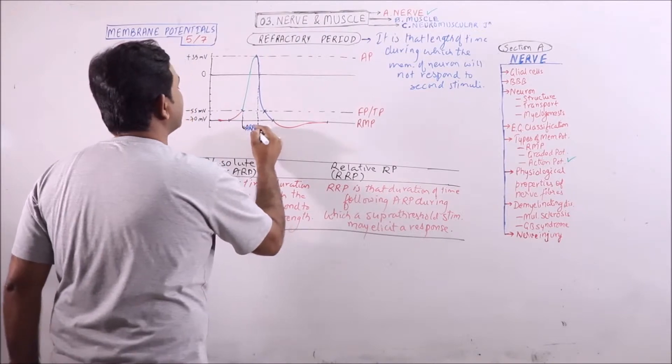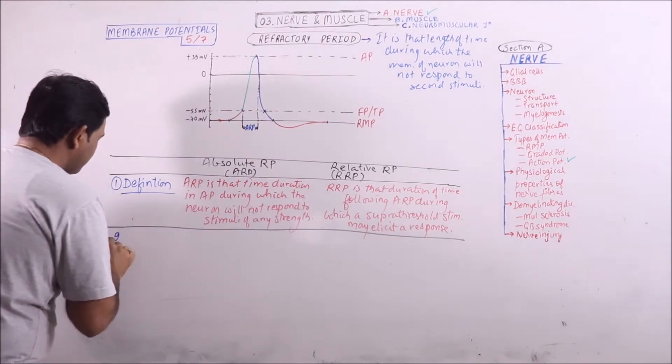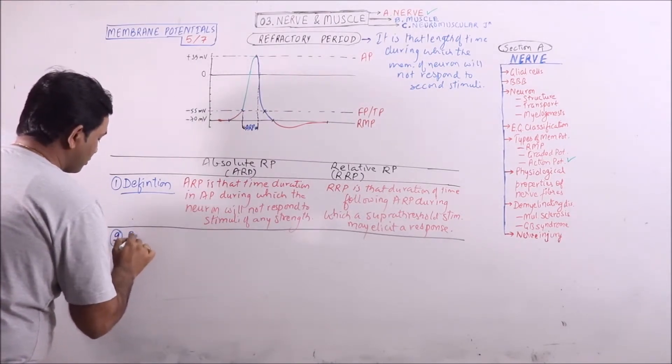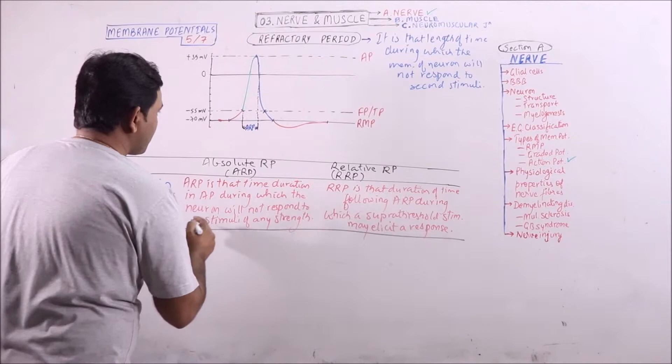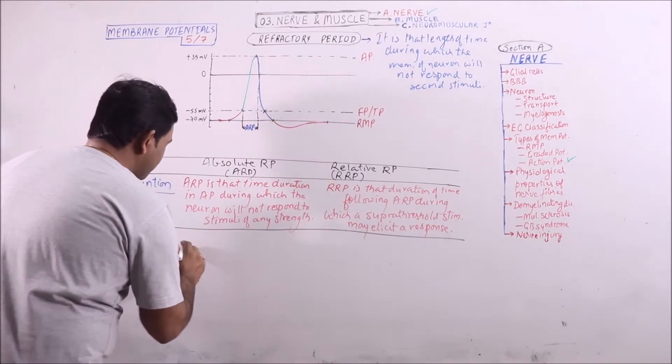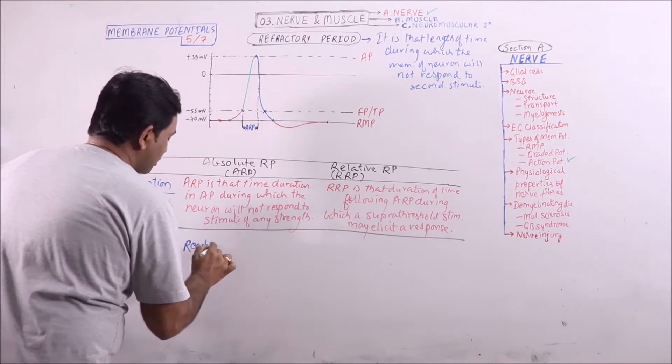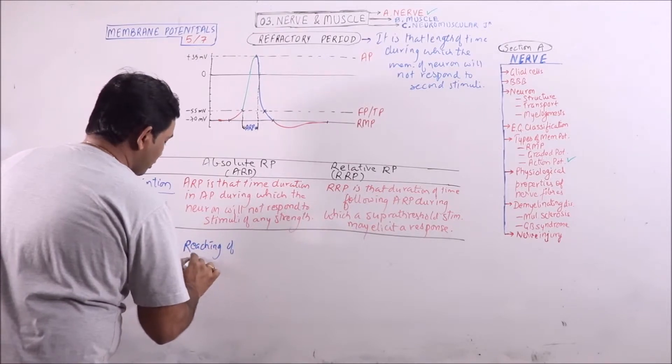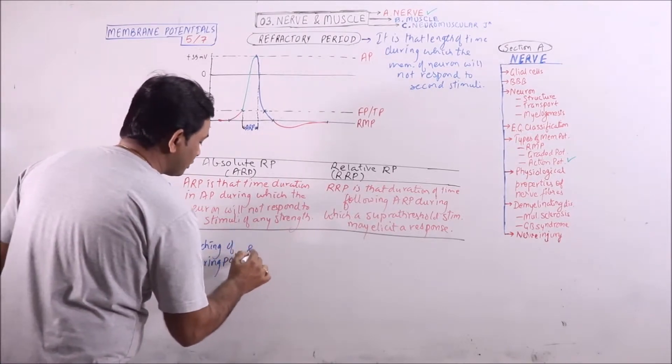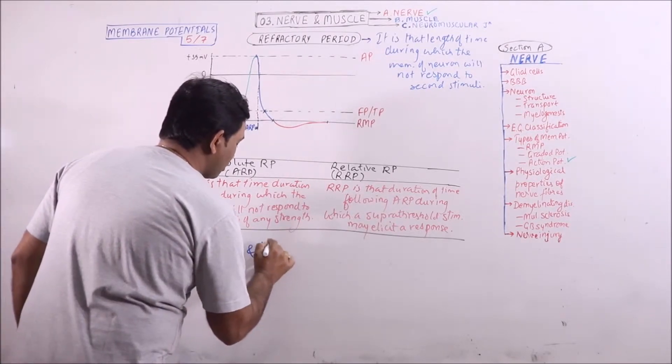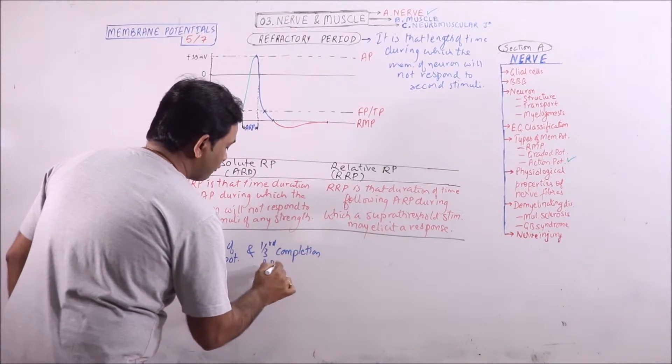So absolute refractory period, where is ARP? ARP is between reaching of firing potential or threshold potential and one-third completion of repolarization.